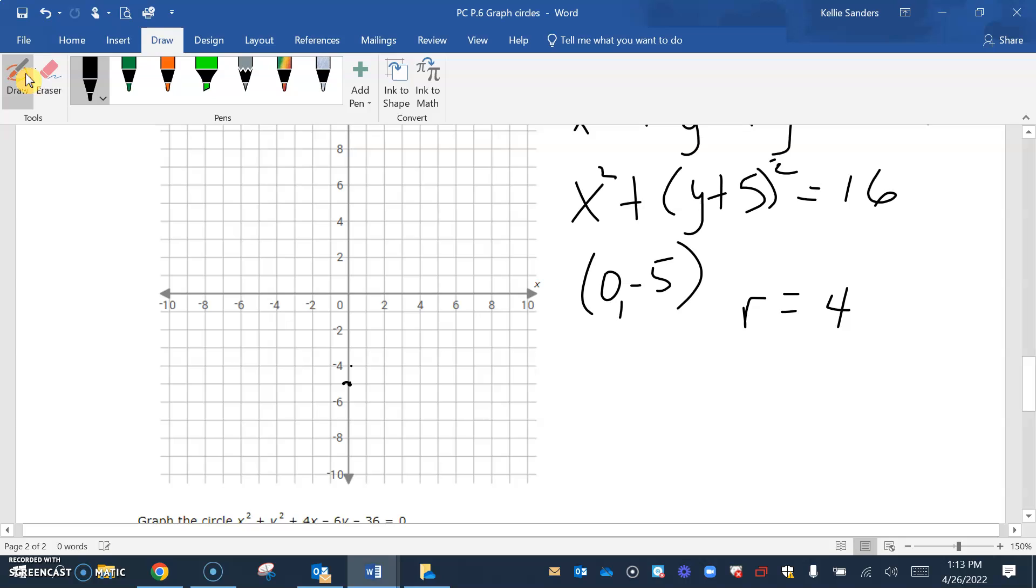(0, -5) is right here with a radius of 4, so 1, 2, 3, 4 in each direction. There we go.